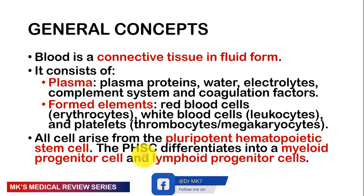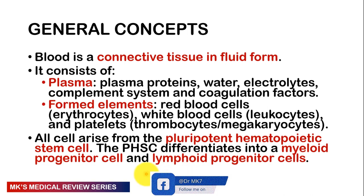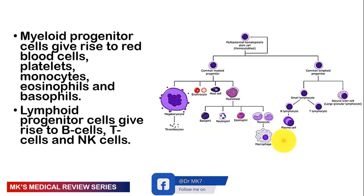This pluripotent hematopoietic stem cell divides into one of two cells: either a myeloid progenitor cell, giving rise to the myeloid cell lineage, or a lymphoid progenitor cell, giving rise to B lymphocytes, T lymphocytes, and natural killer cells. All other cells — red blood cells, granulocytes, megakaryocytes, and macrophages — arise from the myeloid progenitor cell. So the myeloid progenitor gives rise to red blood cells, platelets, monocytes, eosinophils, basophils, and neutrophils, while the lymphoid progenitor gives rise to B cells, T cells, and natural killer cells.